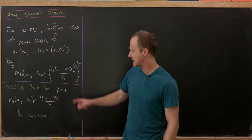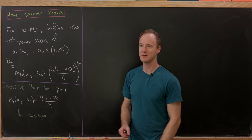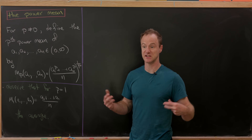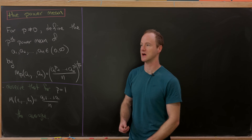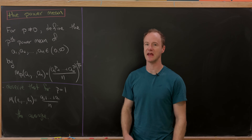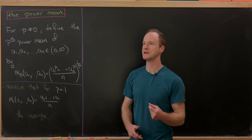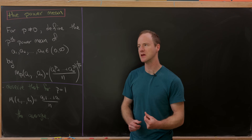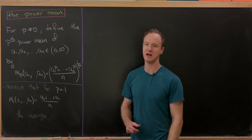For p equals 1, we simply get the average. This is something that should always happen when generalizing: one special case of our generalization should be whatever we're trying to generalize. The power mean is obviously generalizing the average. Keeping that in mind, we should also be able to retrieve other well-known means — and in fact we can. The next one to check would be the geometric mean.